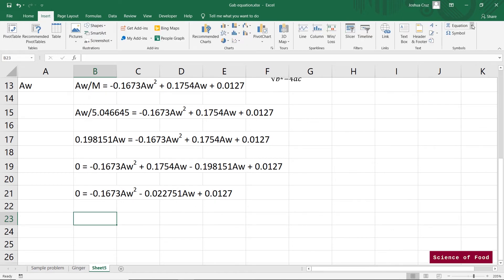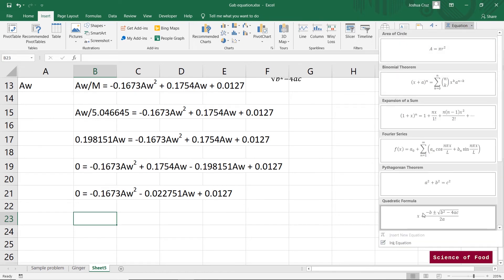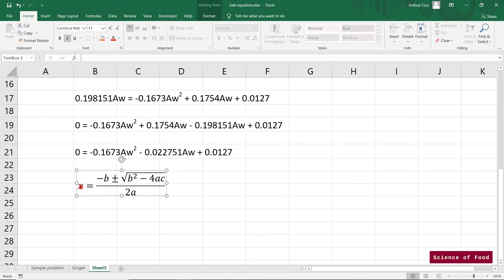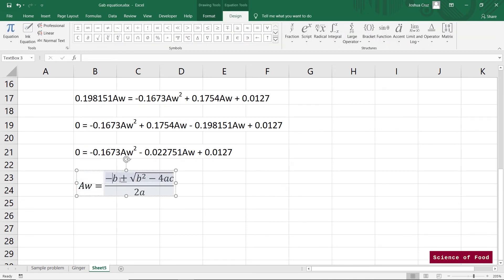And you can do this with online calculators or quadratic equation solvers. But I'm just going to show you how it would look like. So X is water activity again. B is this one. So it's negative 0.022751. Again, negative 0.022751.